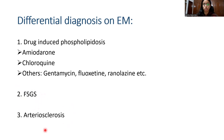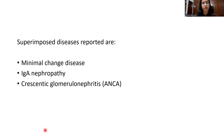Certain superimposed diseases have been reported in the literature, and the most common ones are minimal change disease, IgA nephropathy, and ANCA-associated crescentic glomerulonephritis.